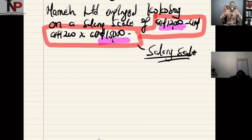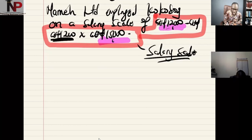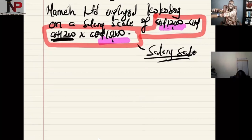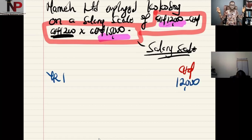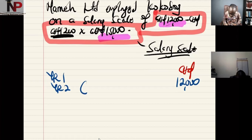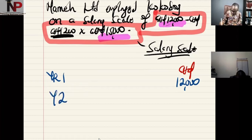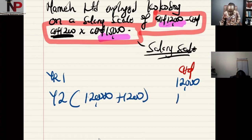What the salary scale means is that in the first year, the person takes a salary of 12,000. Then every year, the person's salary will be increased by 1,200 until the salary gets to 15,000 cedis. And from there, the person will be taking that particular salary. In year one of the employment, the person takes the minimum salary of 12,000 — that is the opening salary in year one. In year two, the person's salary will be increased by 1,200, so we're going to have 12,000 plus 1,200, and that's going to be 13,200.